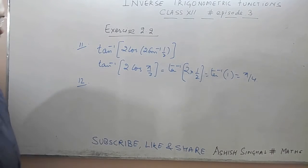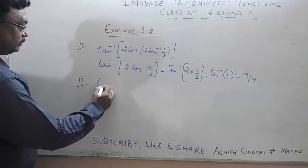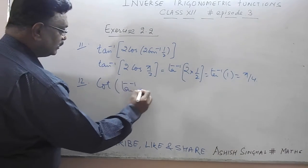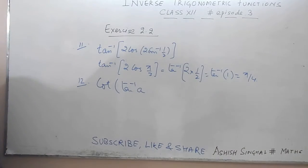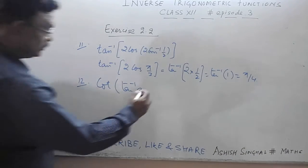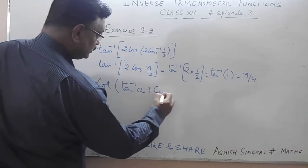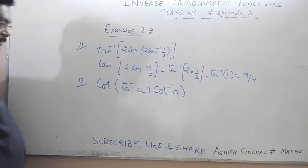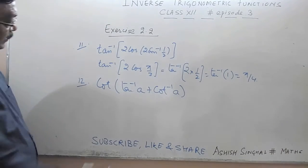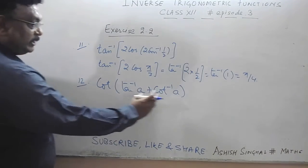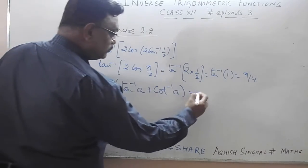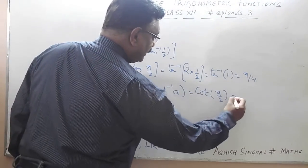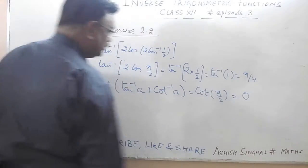Question 12: find the value of cot(tan⁻¹a + cot⁻¹a). As we know, tan⁻¹a + cot⁻¹a = π/2. So we get cot(π/2), and the answer is 0.